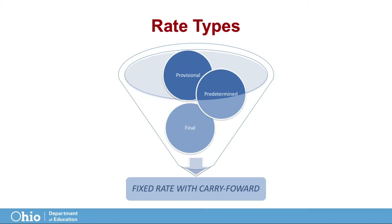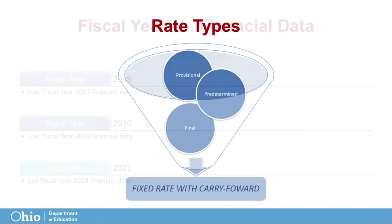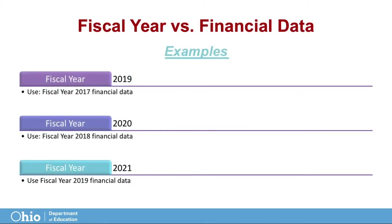With this approach, the difference between the estimated and actual cost of a period is carried forward as an adjustment in a subsequent period. In other words, when calculating the current fiscal year's indirect costs, the actual financial data from two years prior is used to calculate an estimated rate for use in the current year. To calculate a fixed rate in fiscal year 19, the financials from fiscal year 17 are used.